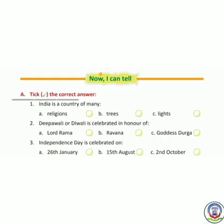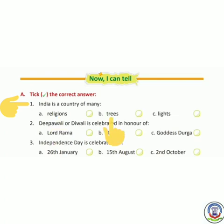A. Fill the correct answer. Number 1: India is a country of many — options are A. Religions, B. Trees, C. Lights. The correct answer is Religions, meaning India has many religions (इंडिया में बहुत से धर्म है).